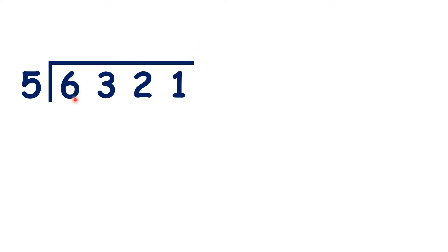So using short division as normal, 6 divided by 5 is 1 remainder 1, 13 divided by 5 is 2 remainder 3, 32 divided by 5 is 6 remainder 2, and now 21 divided by 5 is 4 remainder 1. But what can we do with that remainder 1?